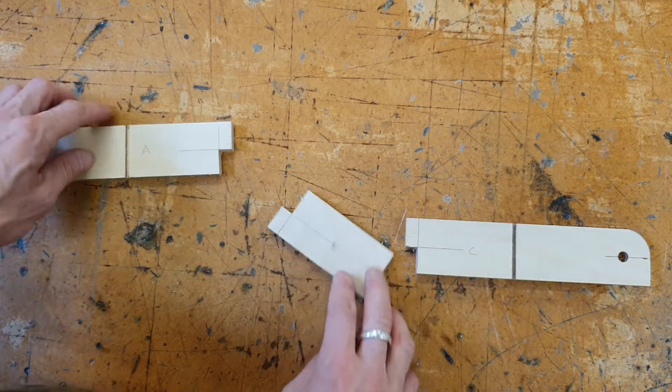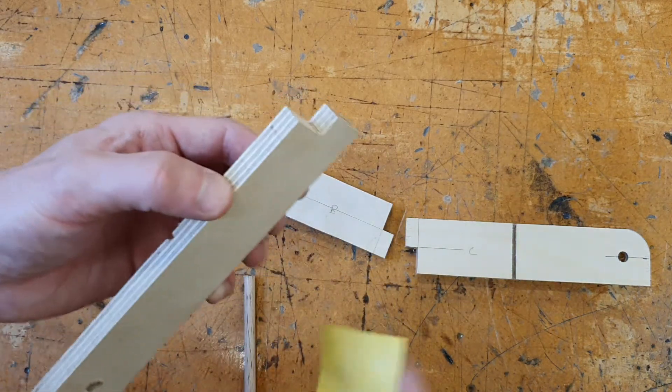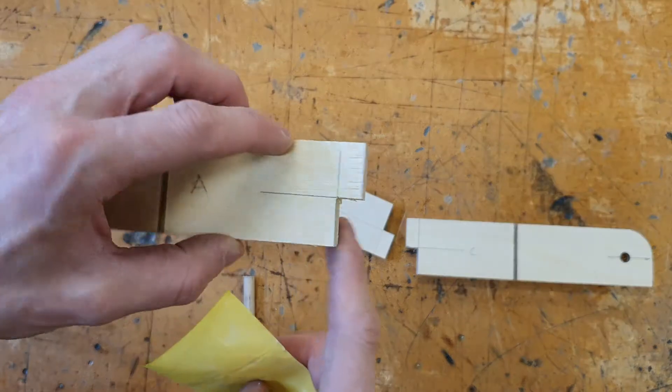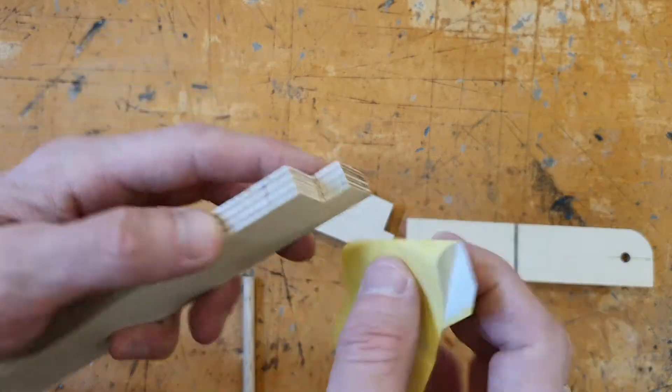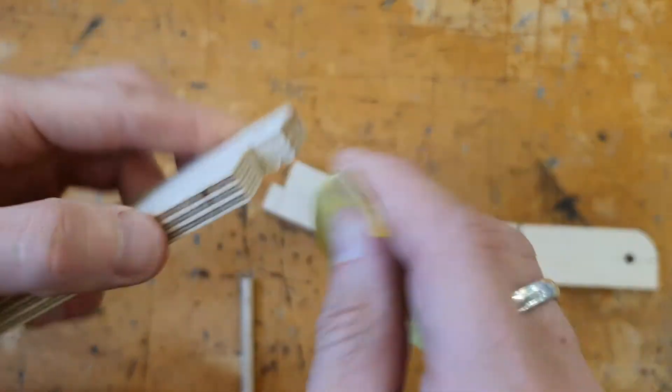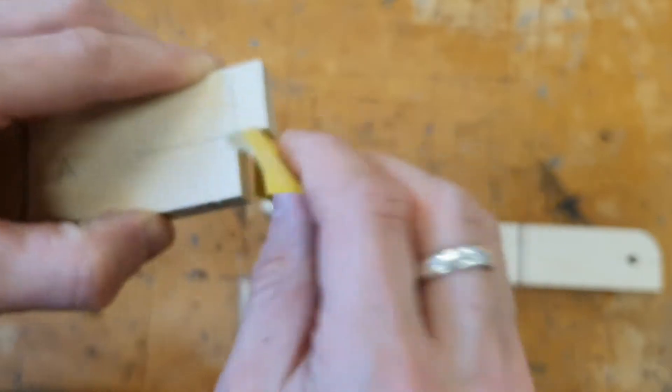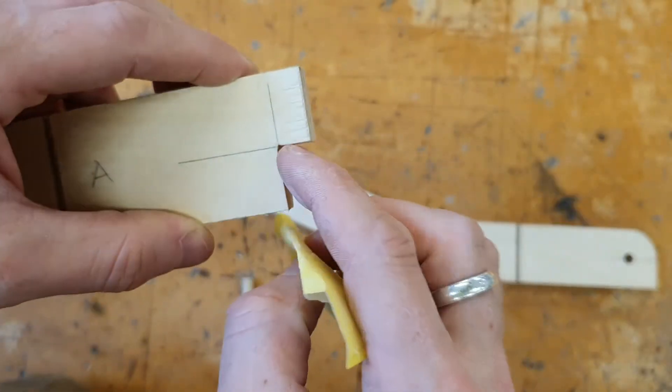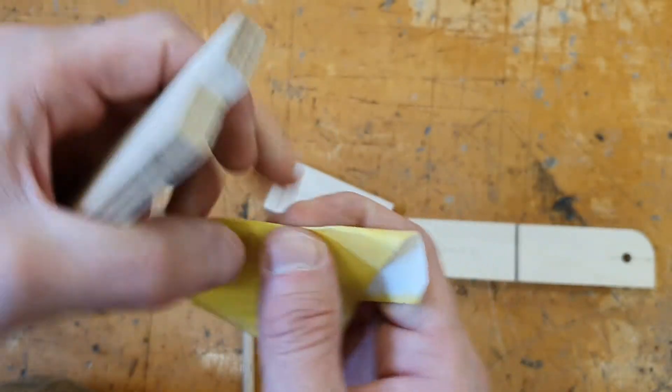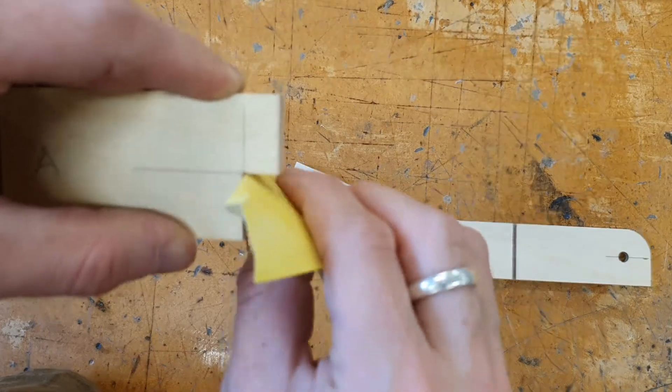And what we're going to do now is a dry fit to check everything is correct. Also, any areas where you've recently cut, you might have some new splinters, so get some of the yellow sandpaper, which is the finer sandpaper. It won't take off too much, but it will remove splinters and tidy up your work.